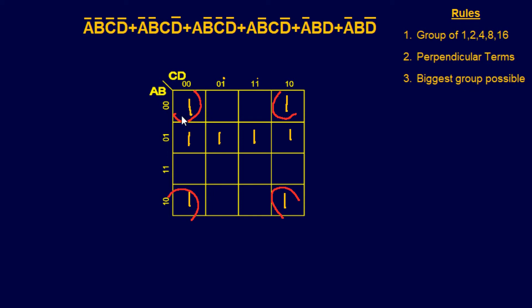This corner group gets a little difficult, so take it step by step. We have A, B-not and A-not, B-not — the A's cancel, leaving B-not. Then we have C-not, D-not and C, D-not — the C's cancel, leaving D-not. So the four-corner group simplifies to B-not·D-not.